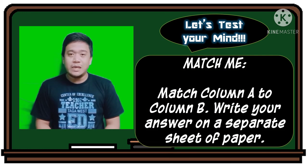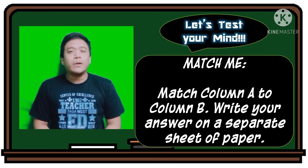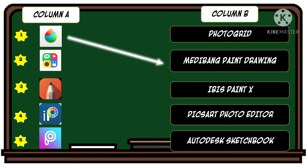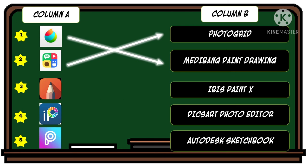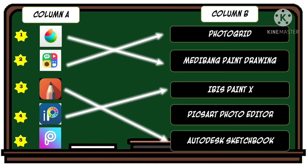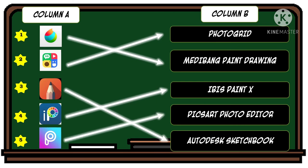Let's test your mind. Match Me — match column A to column B. Write your answer on a separate sheet of paper. You have only five seconds to know the answer. Picture number 1 — the correct answer is Medium Paint Drawing. Picture number 2 — the correct answer is Photo Grid. Picture number 3 — the correct answer is Autodesk Sketchbook. Picture number 4 — the correct answer is Ibis Paint X. Picture number 5 — the correct answer is Pixart Photo Editor.